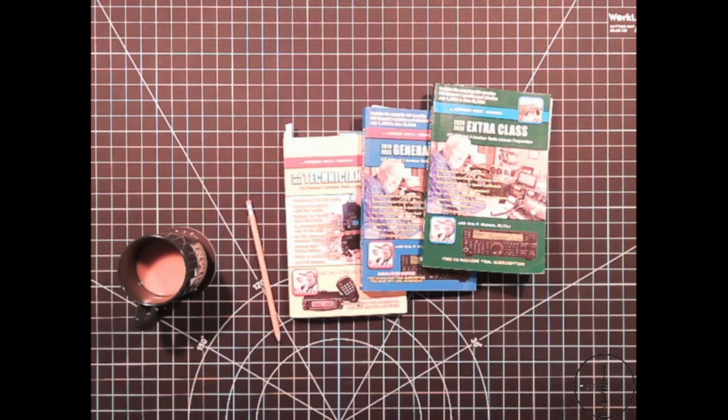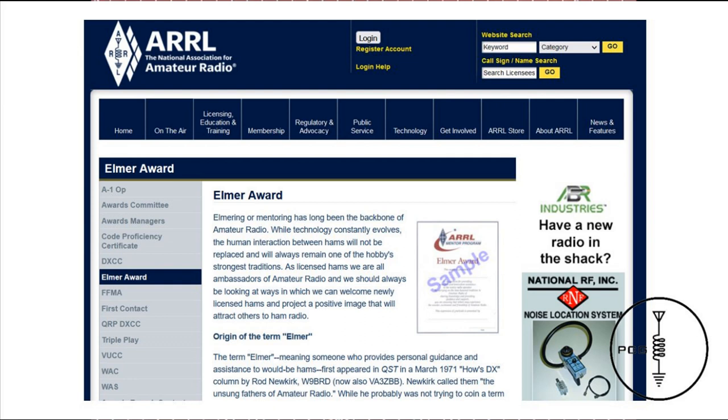There are some hams you might encounter who could be considered Elmers and they're eager to help someone new. However, I think when a new licensee enters the amateur radio world, some have an impression that most, if not all hams are Elmers, and they are all warm and welcoming. I can't say I blame anyone for having that impression because it is something the amateur radio community encourages when promoting the hobby.